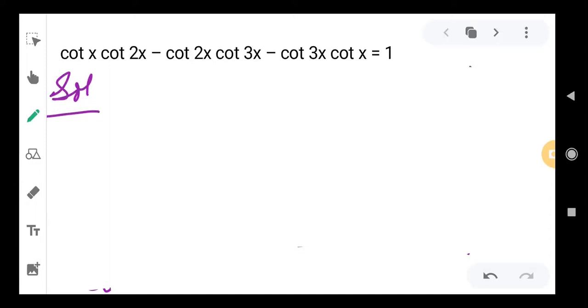So guys, let's solve this question. First of all, we write cot 3x equal to cot(x + 2x). We start this question by this statement and now we are going to use the cot(a + b) formula.